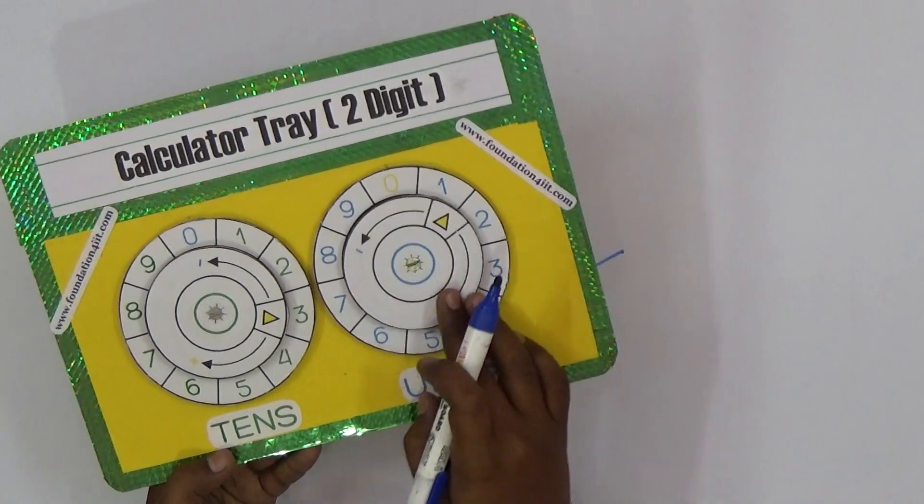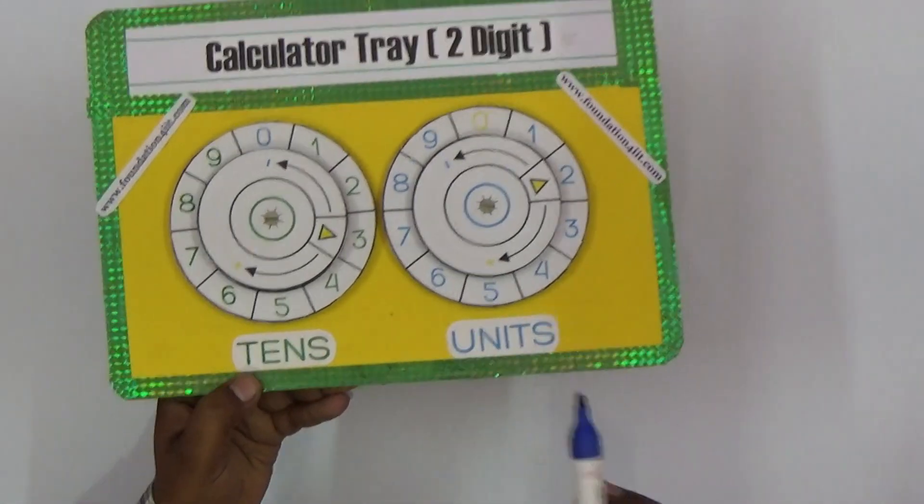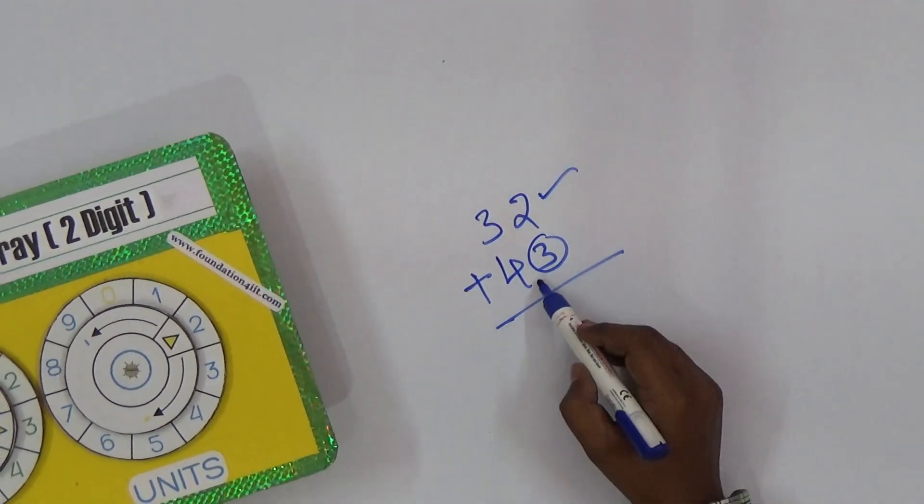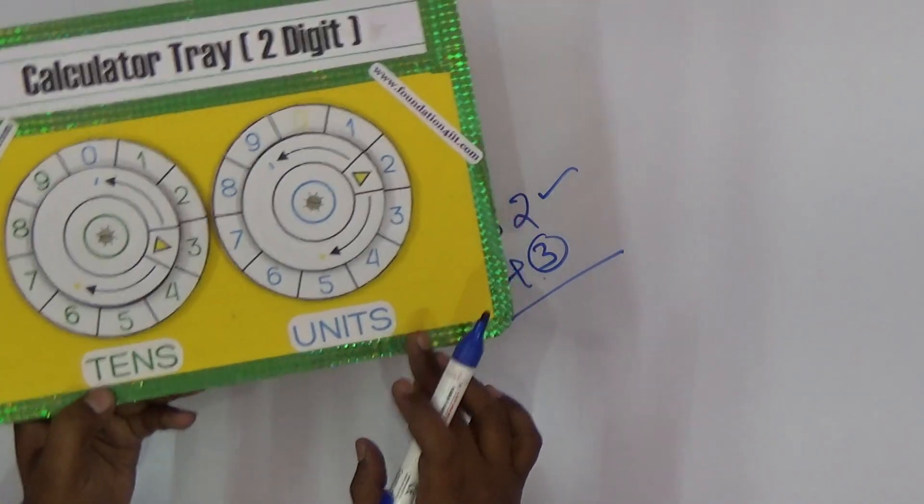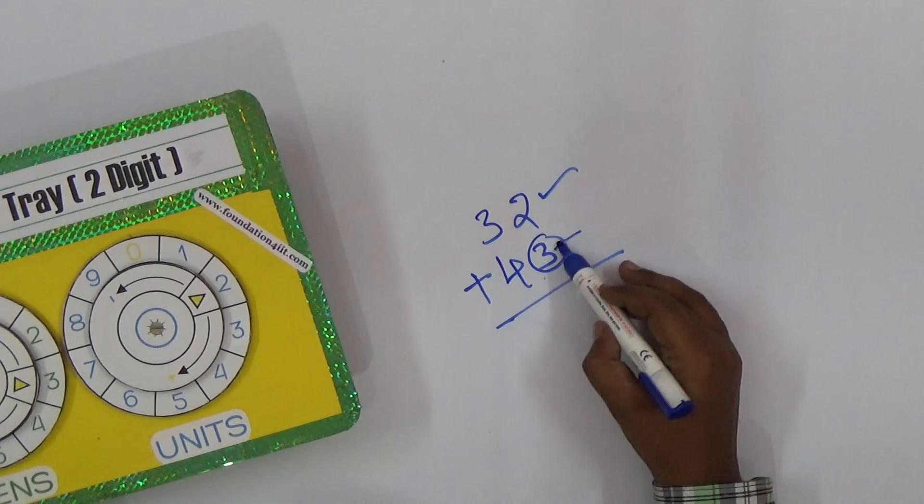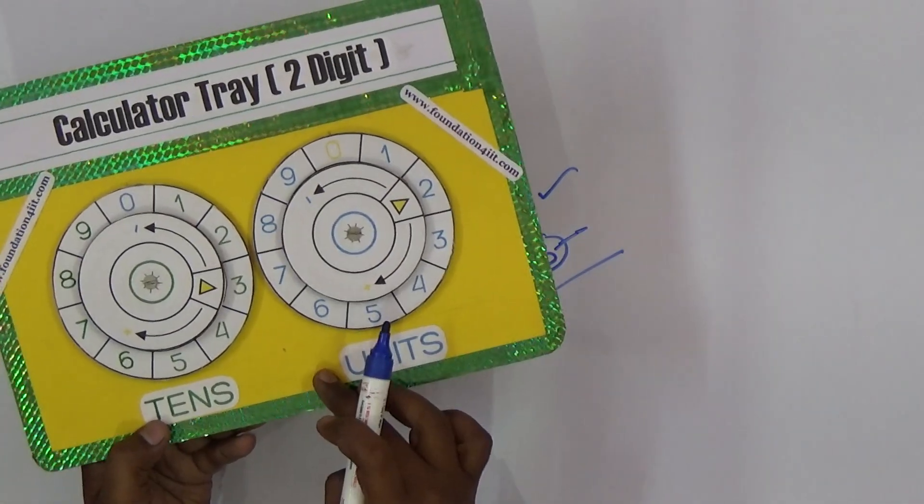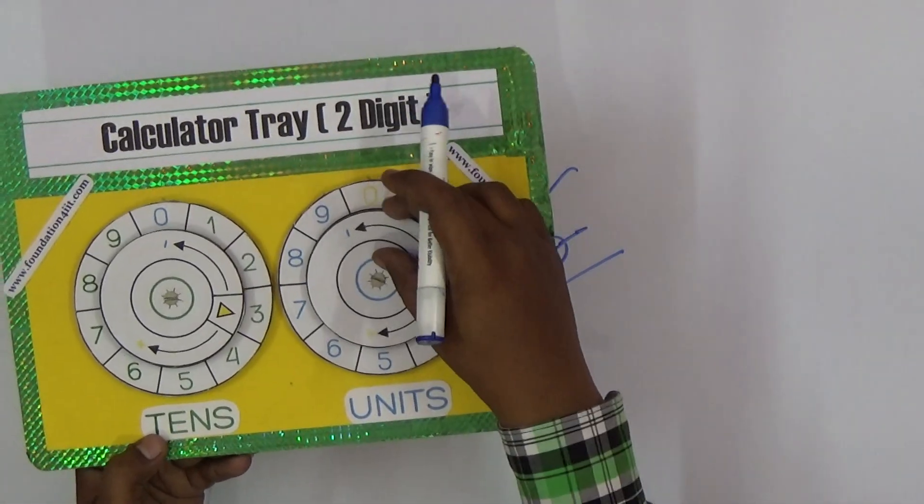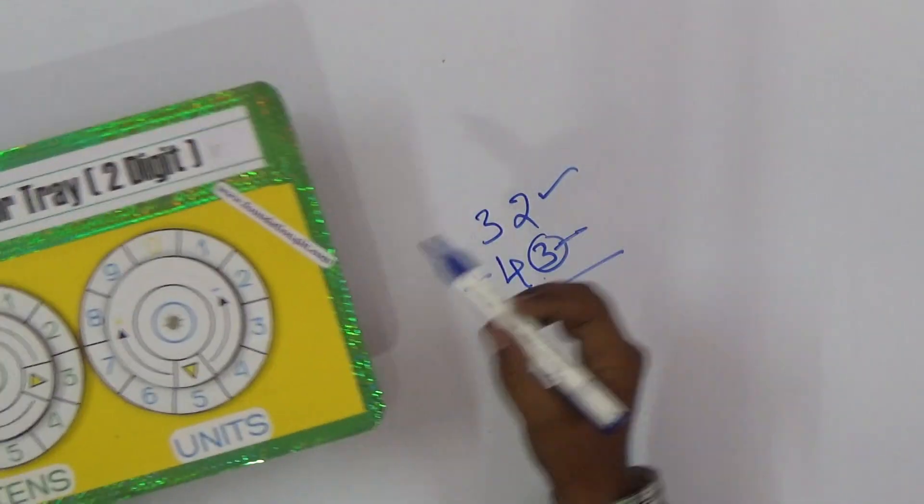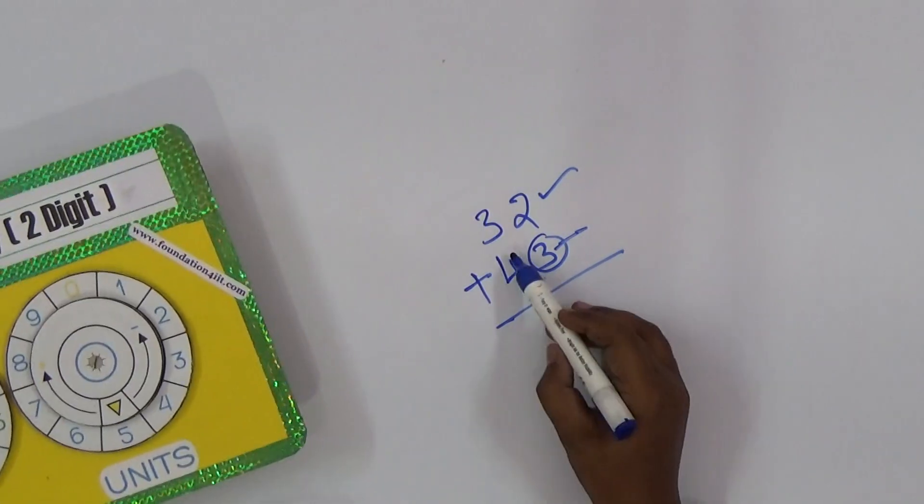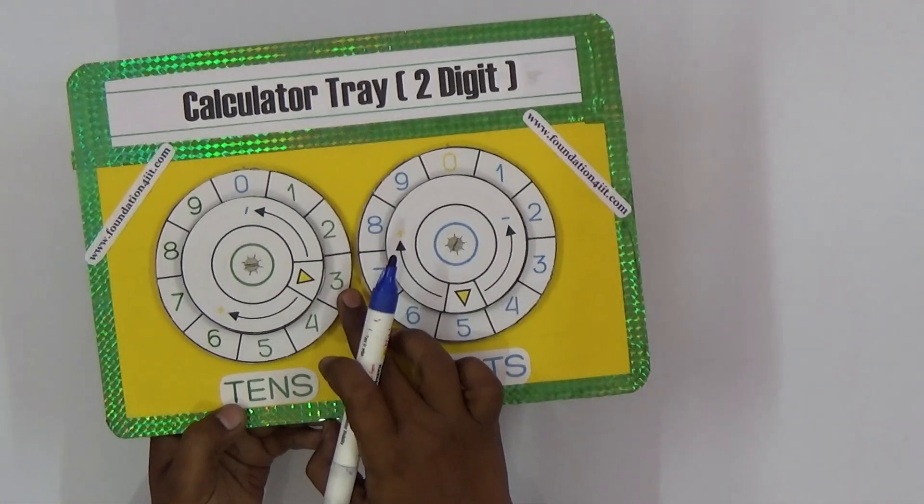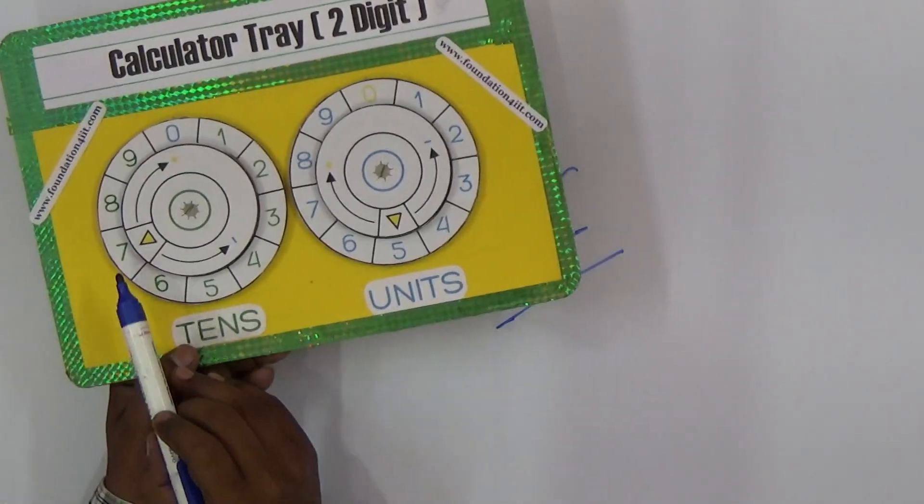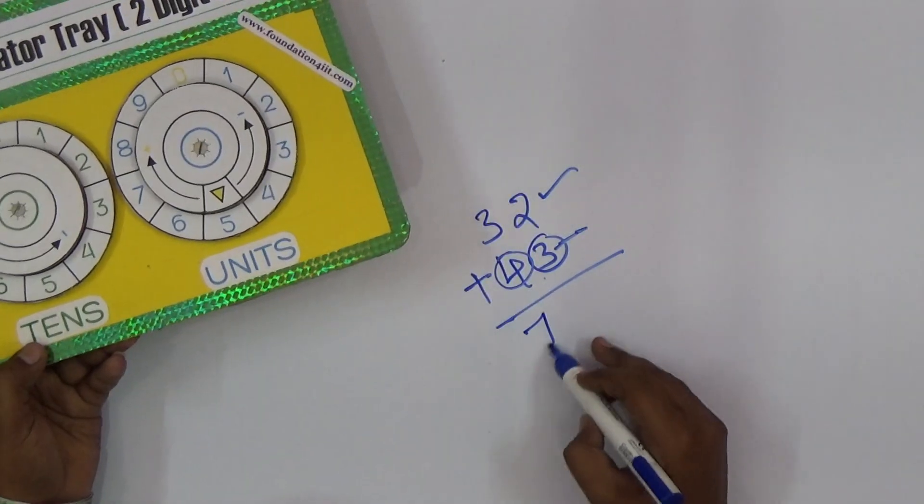Now for units place, I should add 43. First always add units, then only tens. It is 3, so this should count extra 3 more steps. Previous is 2, so 1, 2, 3 - three steps you can forward this. Units place is 4, previous is 3, so 1, 2, 3, 4. Finally, here is at 7, this is at 5. This is 75.